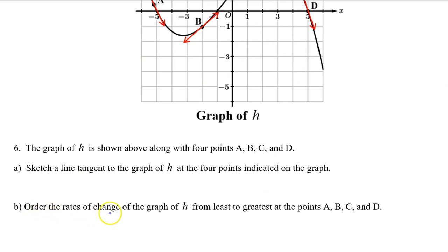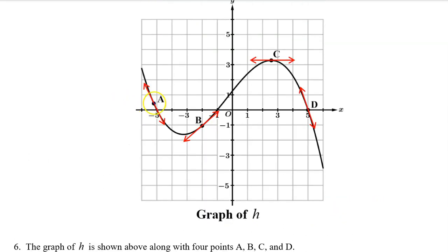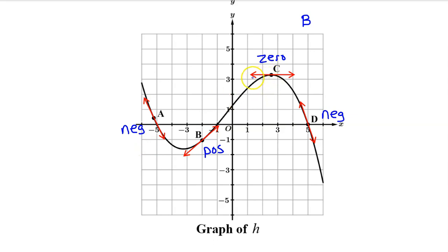Part B: order the rates of change of the graph of h from least to greatest at points a, b, c, and d. The instantaneous rate of change at a point is the slope of the tangent line through that point. The slope at a is negative, at b is positive, at c is zero, and at d is negative. Since b is the only positive slope, the rate of change at b is the greatest. Next is c with a slope of zero.